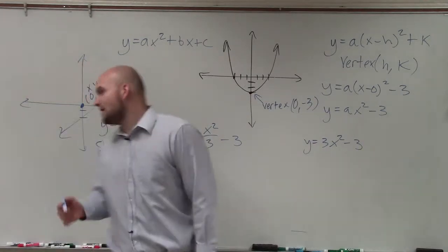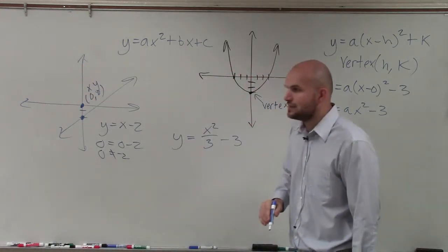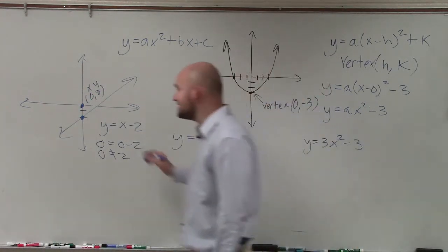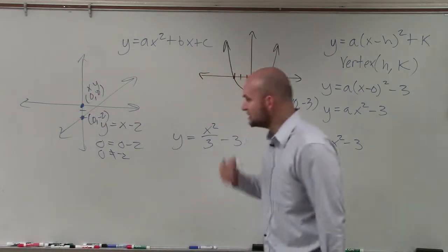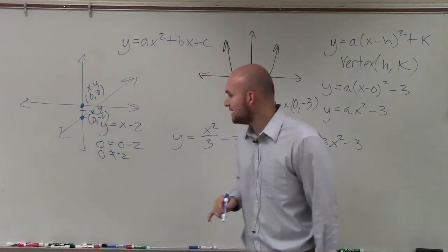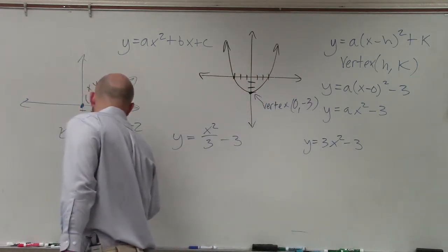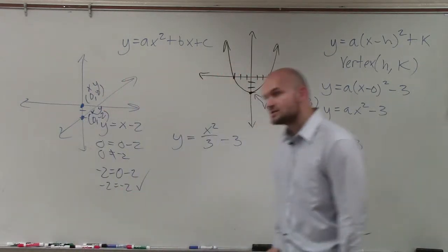Alright. But what about the point 0, negative 2? Does that look like that's on the line, Marissa? Yeah, it does. Doesn't it? 0, negative 2. Can we prove that algebraically? Of course we can. Again, let's plug 0 in for x and negative 2 in for y. So I do negative 2 equals 0 minus 2. Negative 2 equals negative 2. So it works.